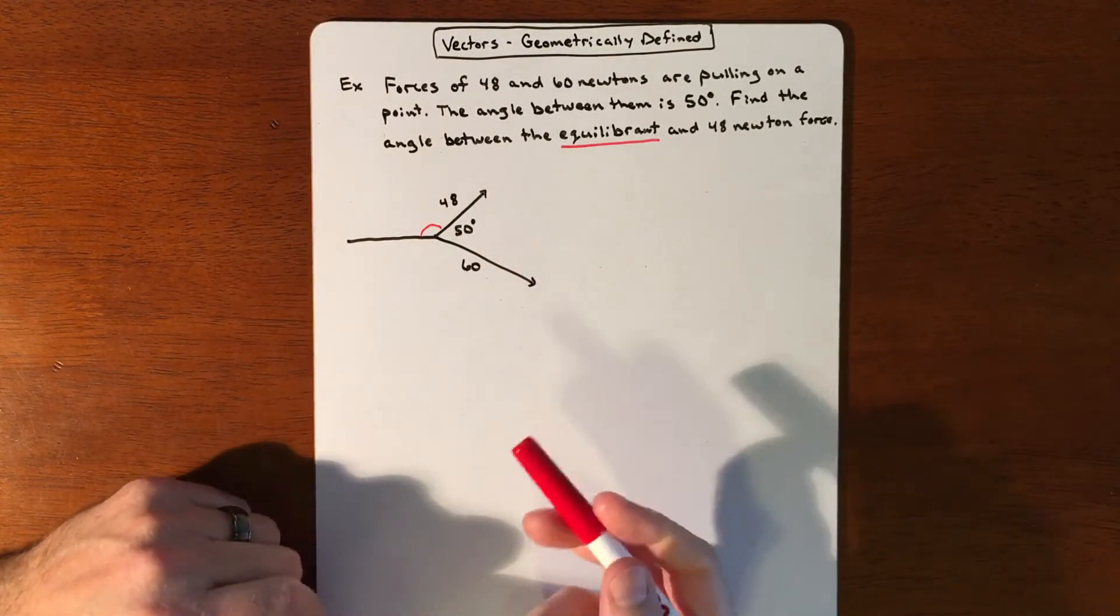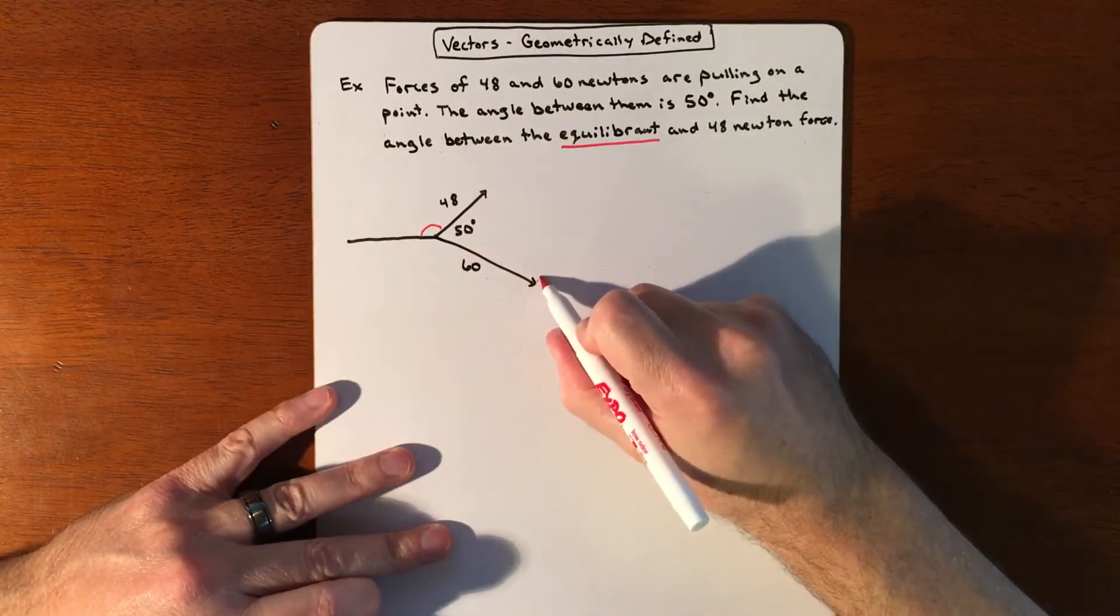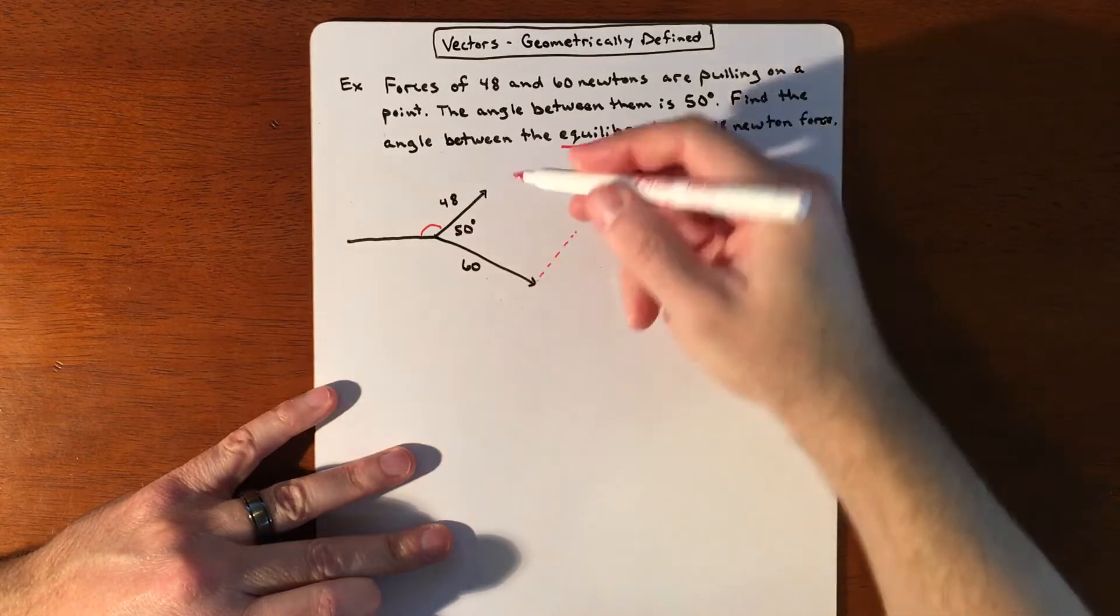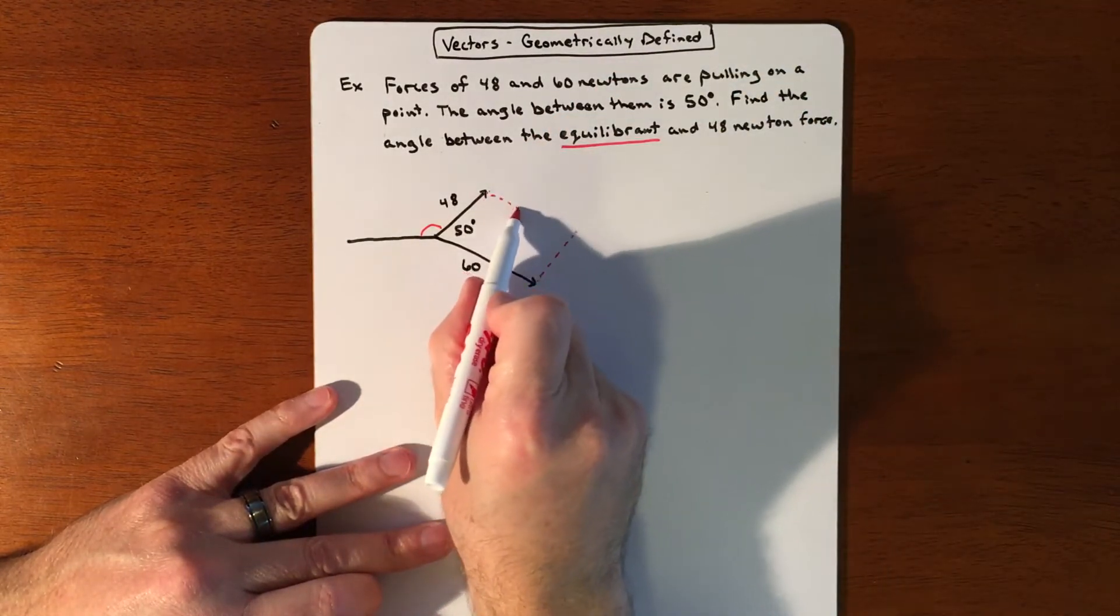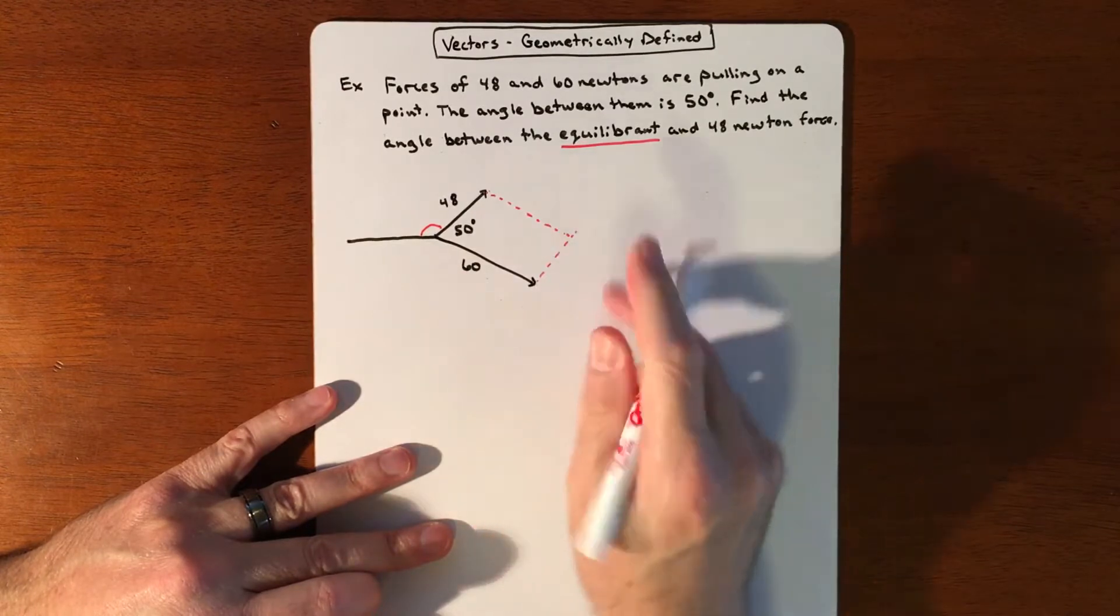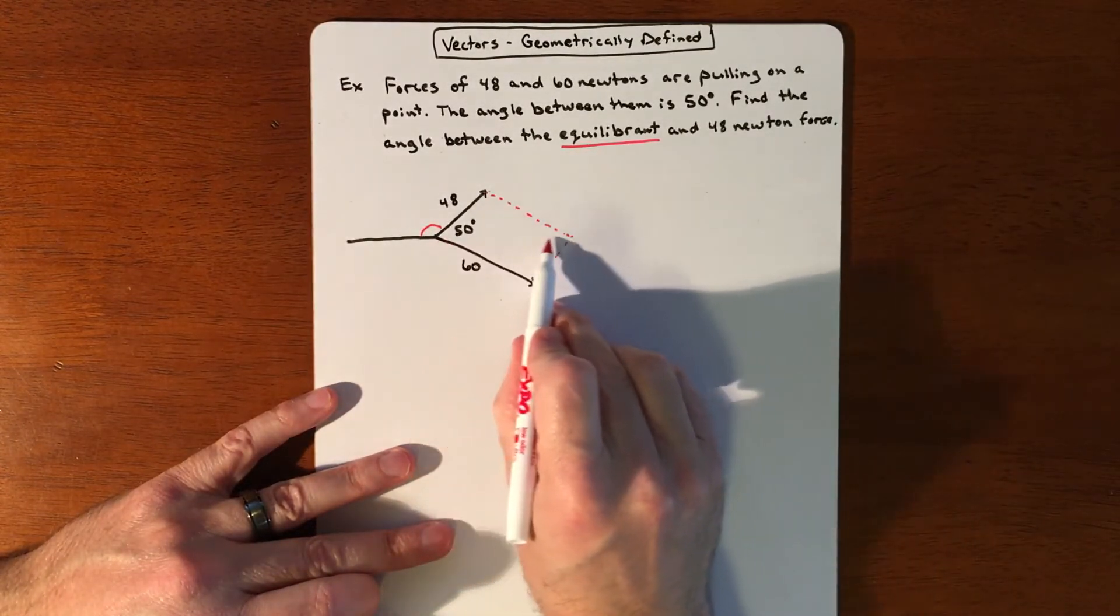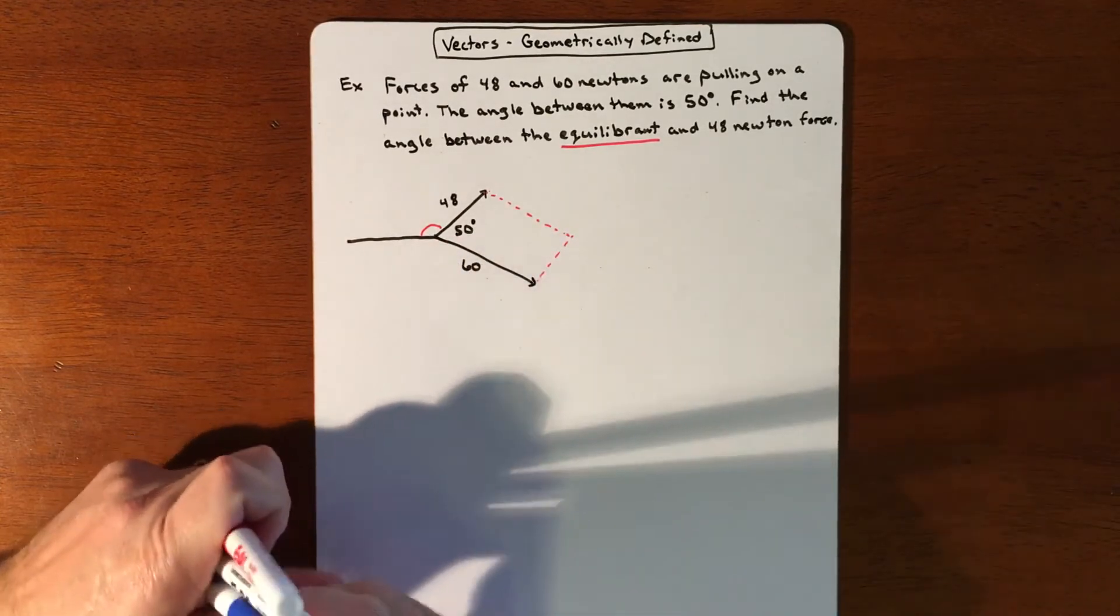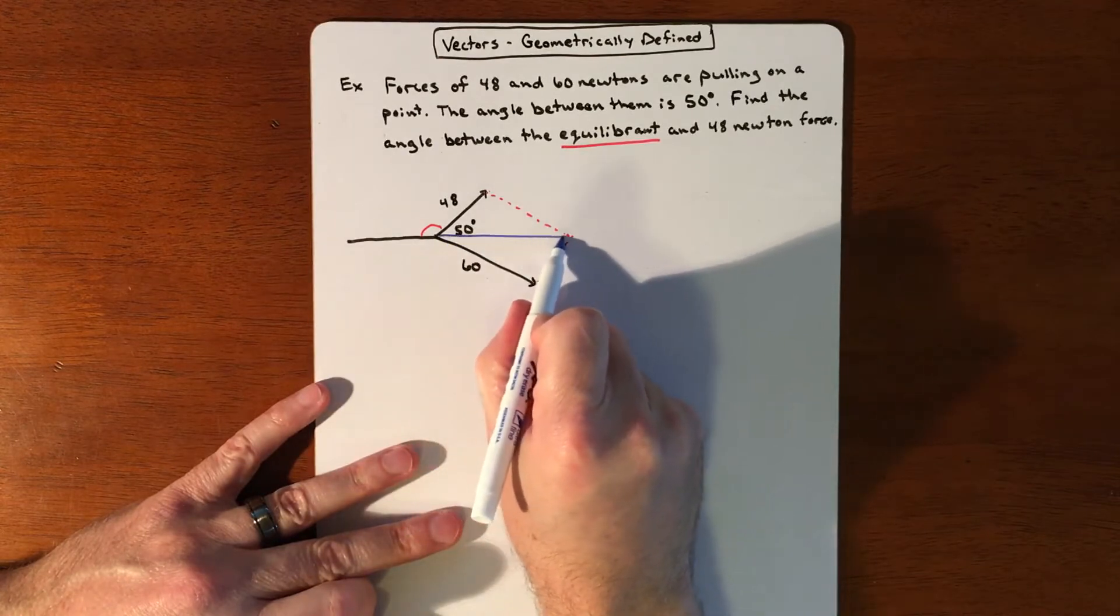So what we're going to do is we're going to make a parallelogram out of this thing. We're going to be tacking on this vector onto this one and we're going to be tacking this vector onto this one, trying to keep it as parallel as possible. So they should meet perfectly. Hopefully if I drew that okay, we got this going on.